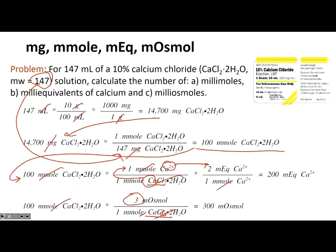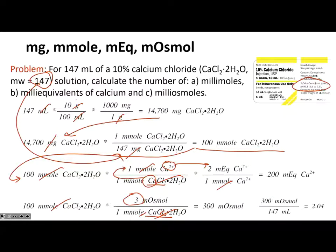We can verify that answer. The label on the commercial product says 2.04 milliosmoles per milliliter. Taking our 300 milliosmoles divided by 147 milliliters gives 2.04 — which matches what's labeled on the actual product. So our math is confirmed.